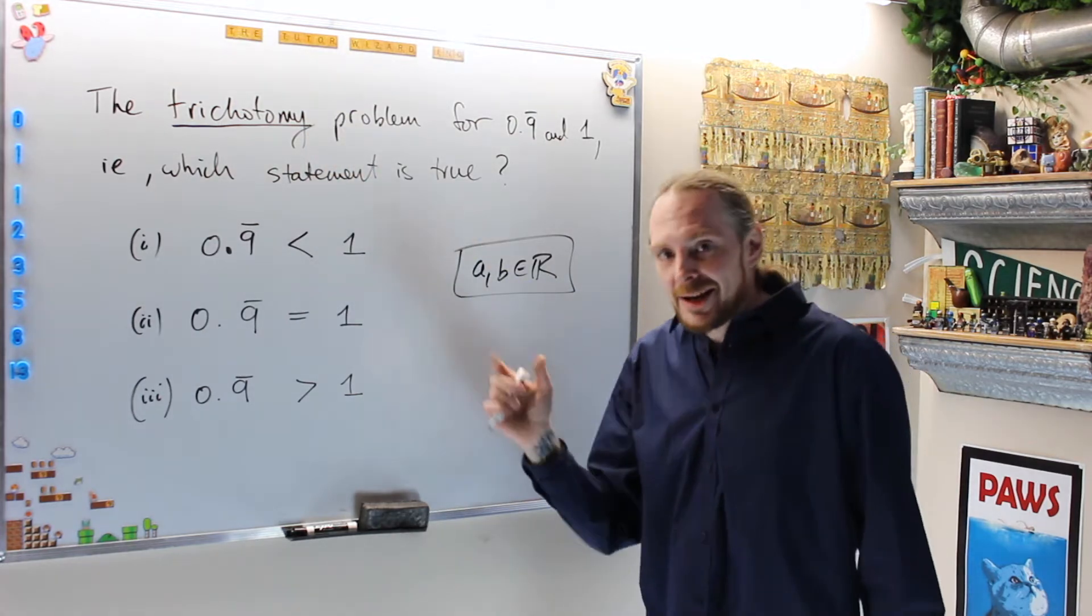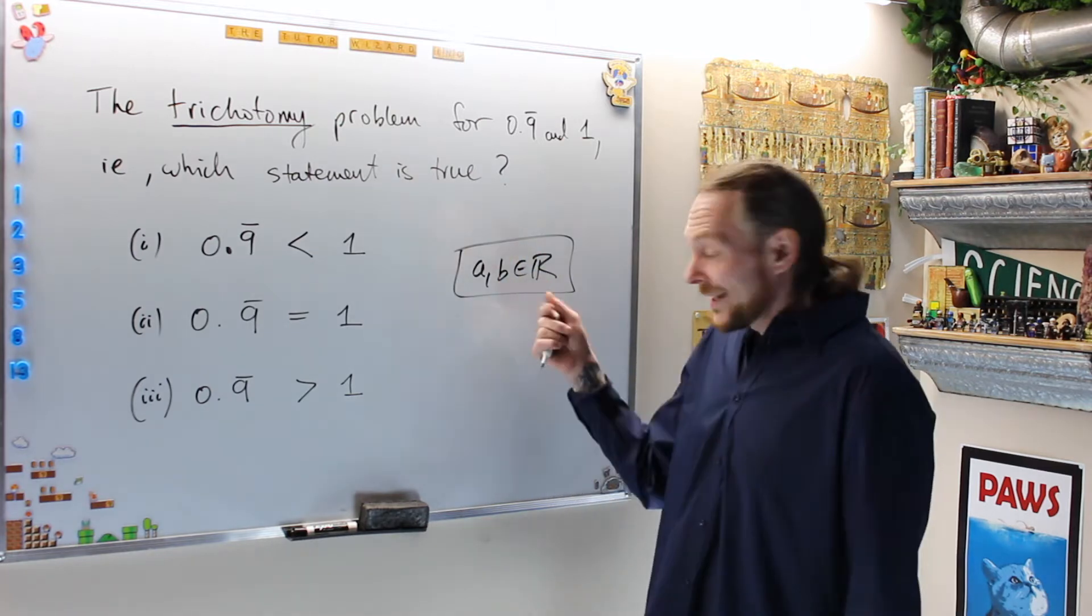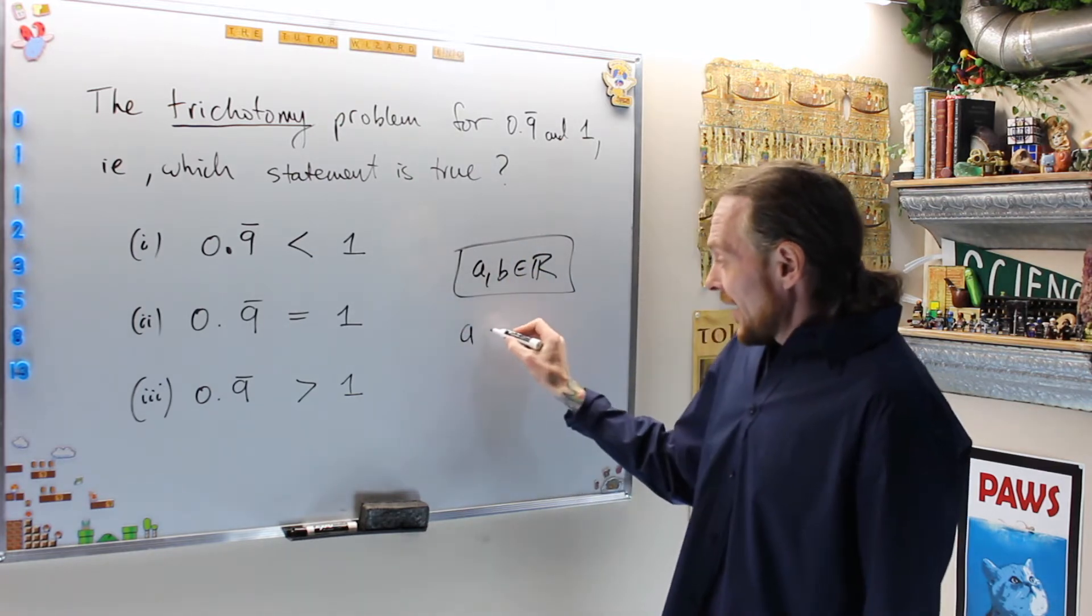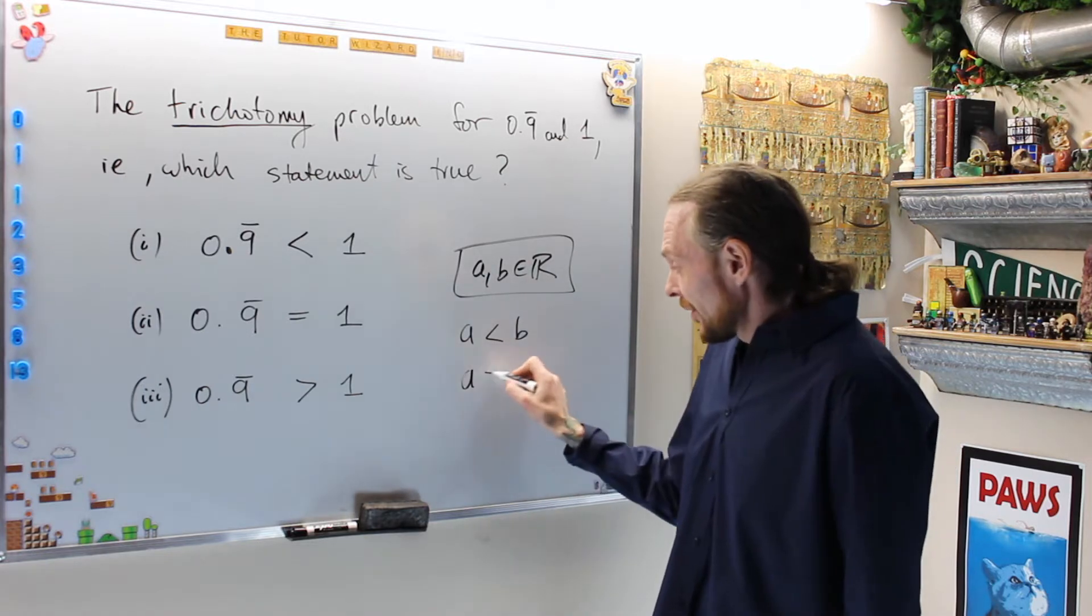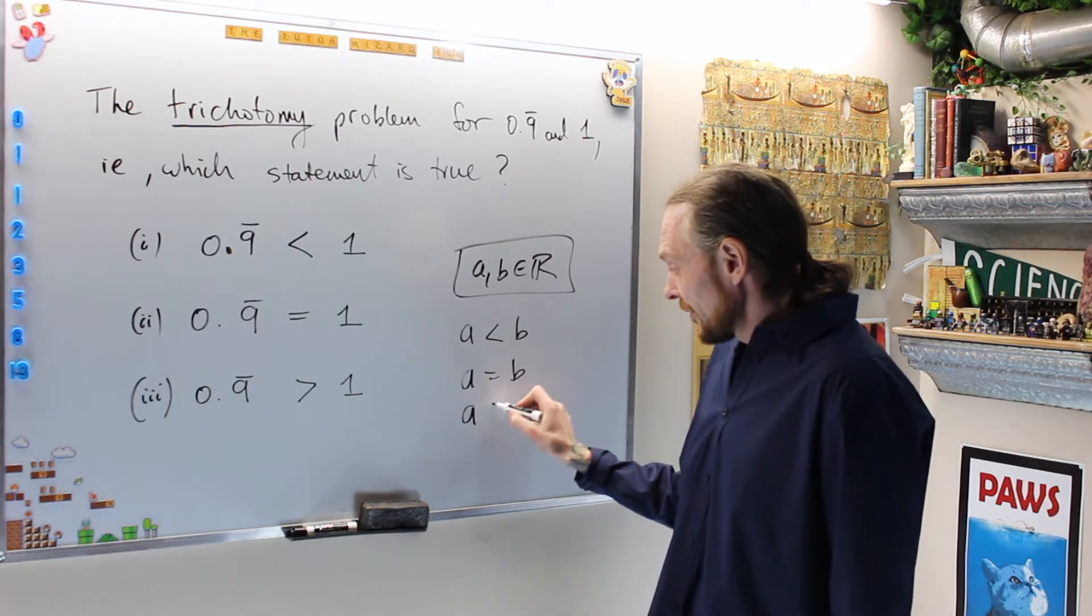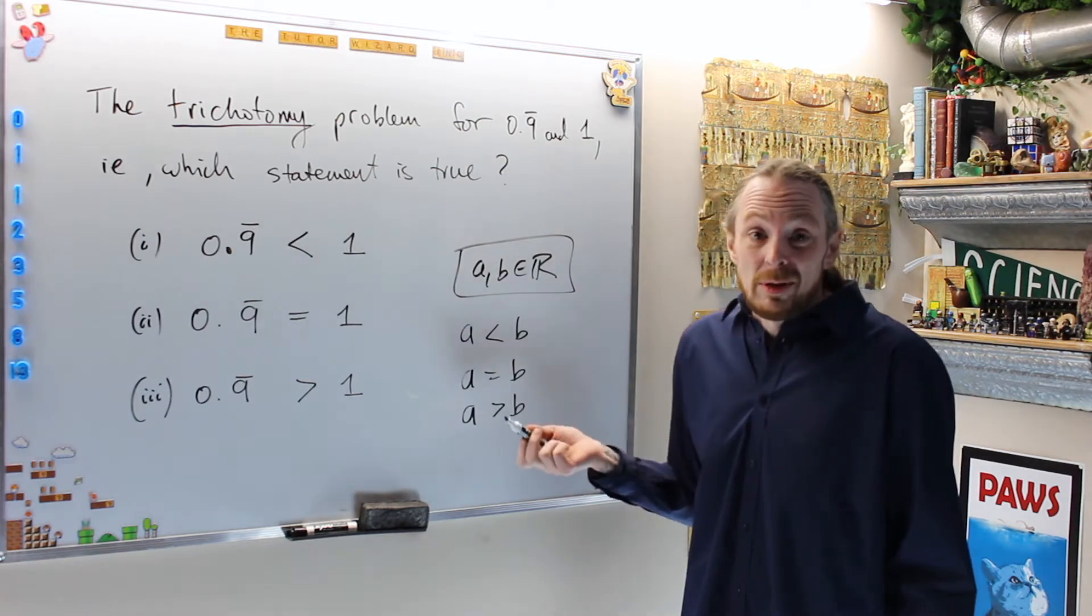Usually it's a dichotomy, a dilemma of two. This is a dilemma of three. What is it? For any two numbers, we have to have that the first is less than the second, or the first is equal to the second, or the first is larger than the second. That has to be true for any two real numbers.